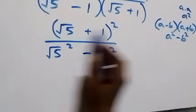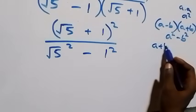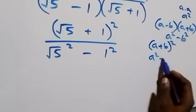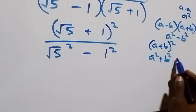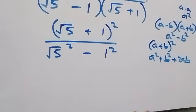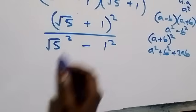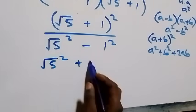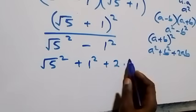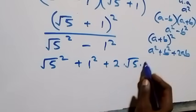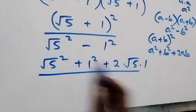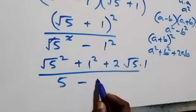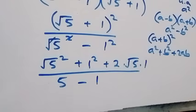So the denominator becomes root five squared minus one squared. For the numerator expansion, using a plus b all squared equals a squared plus two ab plus b squared, this becomes root five squared plus one squared plus two times root five times one.